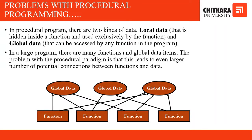Let us discuss the problems with procedural programming in detail. In a procedural program there are two kinds of data: local data, which stays hidden inside a function and is used exclusively by the function itself, and global data, which can be accessed by any function in the program. In a large program with many functions and global data items, this leads to an even larger number of potential connections between functions and data. The global data is shared by functions through various connections, while local data stays inside the function itself.